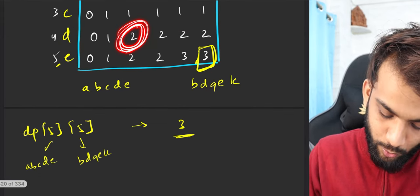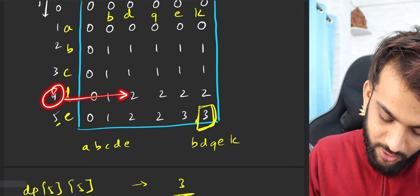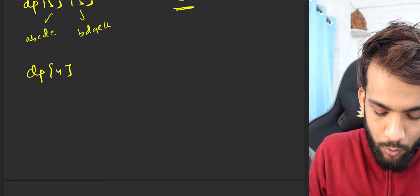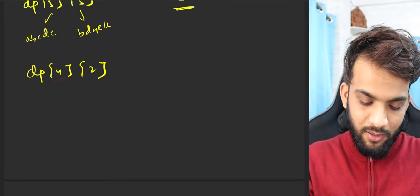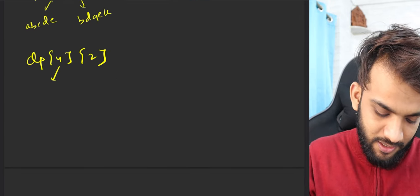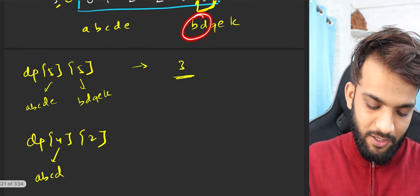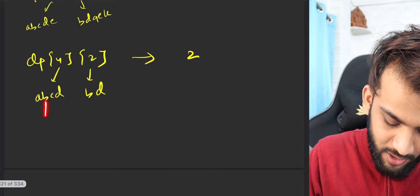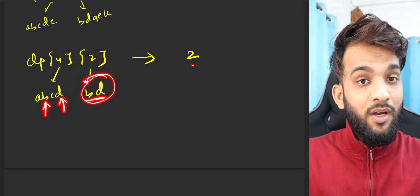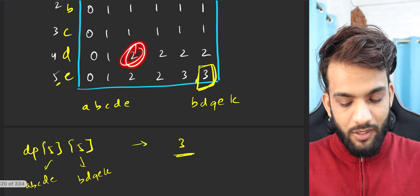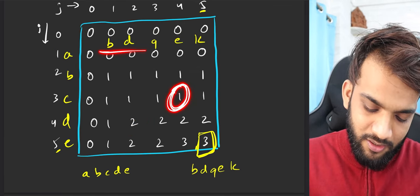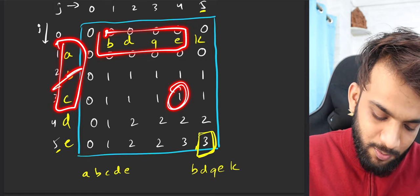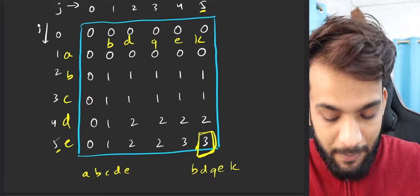For example, the value 2 is stored at index [4][2]. dp[4][2] means: take the length-4 string ABCD and the length-2 string BD. The LCS of those is 2 — we have B and D in common. Similarly, the value 1 stored at another cell means: in BDGE and ABC, only B is common, so 1 is stored there. That's the meaning of the DP values.